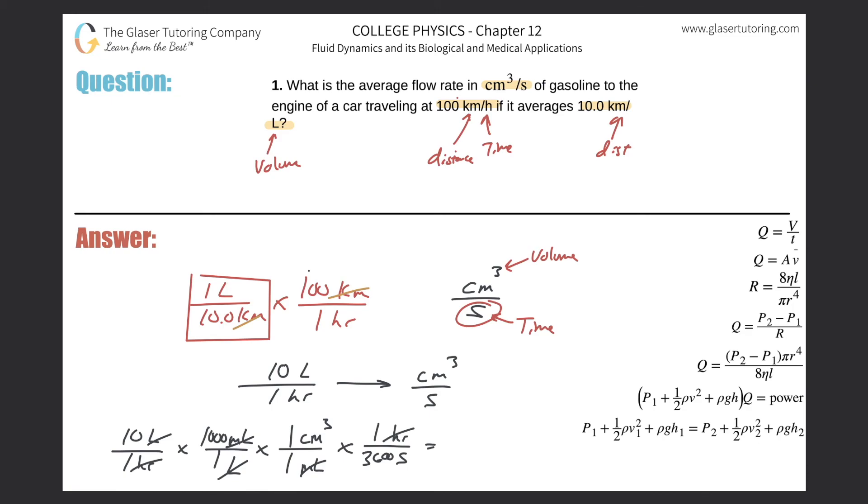Now just do the math. The numerator is going to be 10 times 1000, all divided then by 3600. And here we get a value of about 2.78 centimeter cubed per second. And that's it—no real physics necessary, this is just a unit conversion.